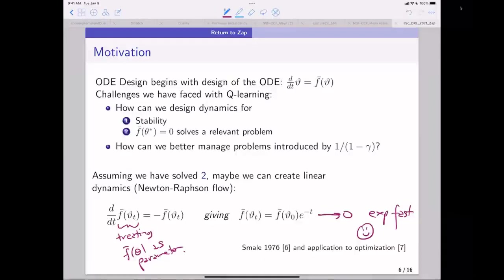If that's the parameter, I can do whatever I want with it. So why not just choose a linear differential equation. And if I do that, look at that. I get F bar theta T is equal to F bar theta zero e to the minus T. You all know how to solve differential equations. And so that goes to zero exponentially fast.